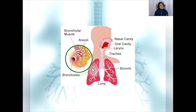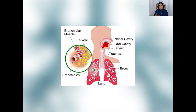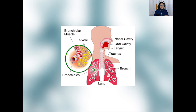When we breathe in, air enters our nose or mouth and passes down the windpipe, or trachea. The trachea splits into two tubes called the bronchi, one leading to each lung. Each bronchus — the singular of bronchi — divides into smaller and smaller tubes called bronchioles, which eventually end at microscopic air sacs called alveoli.